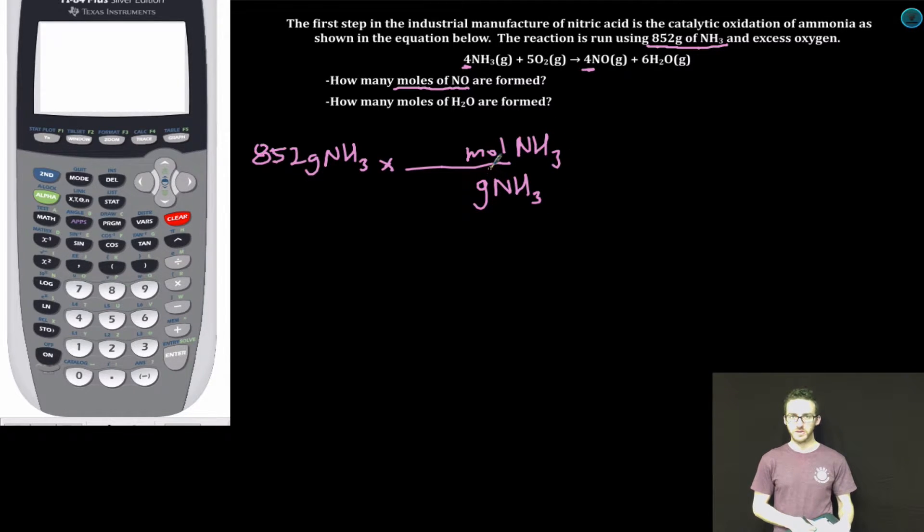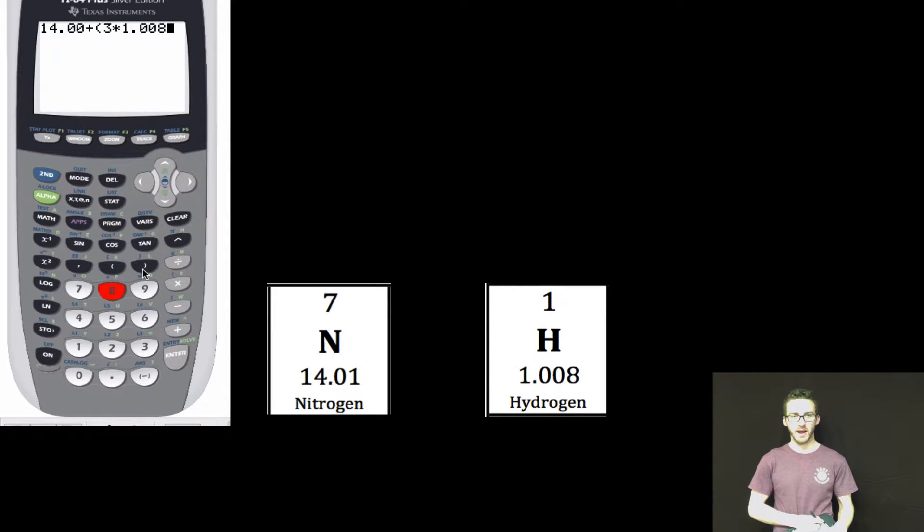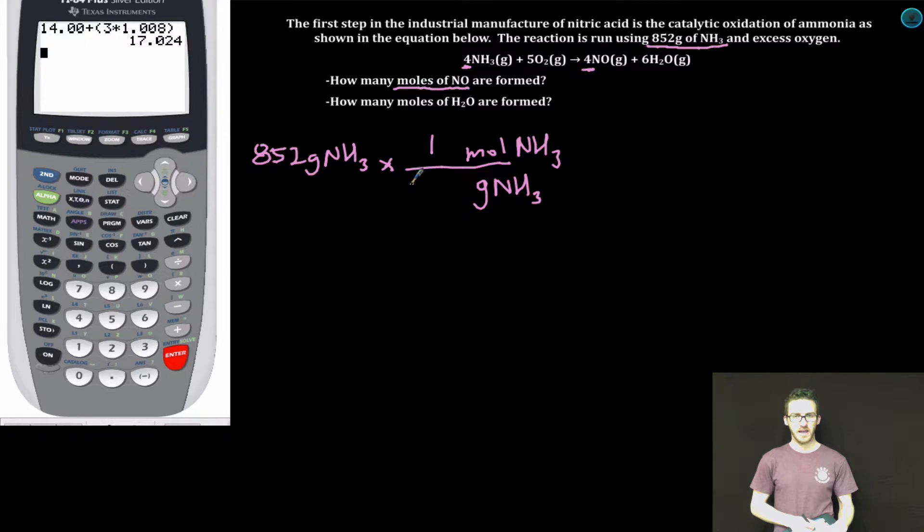When it's grams to moles, I determine that mass of one mole from the periodic table. I'm going to add together the mass of one nitrogen and three hydrogen. 14.0 plus 3 times 1.08. So the molar mass of NH3 is 17.024. Let's set up our next conversion factor. This time moles NH3 on the bottom and now I can go to moles of NO on the top. The relationship in moles between these two things is given to me in the balanced chemical equation as 4 to 4.